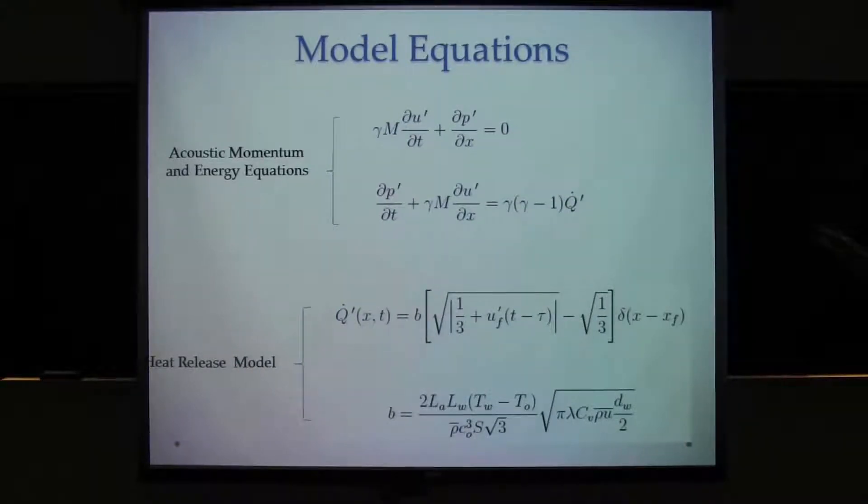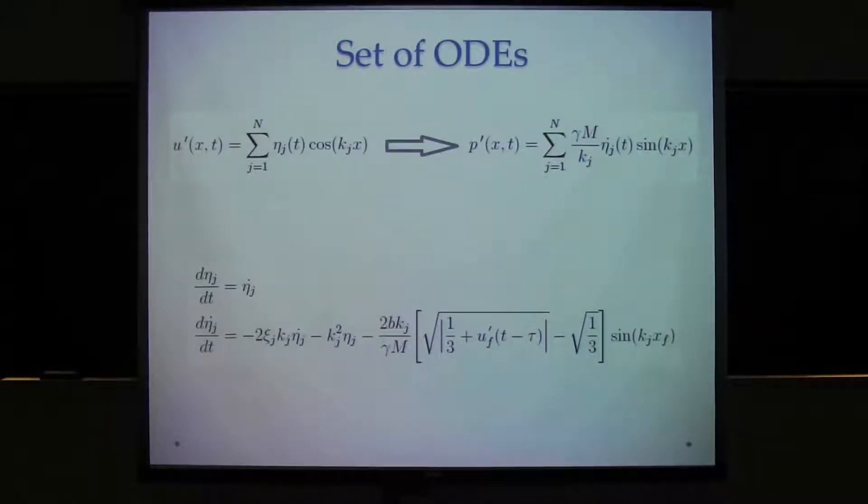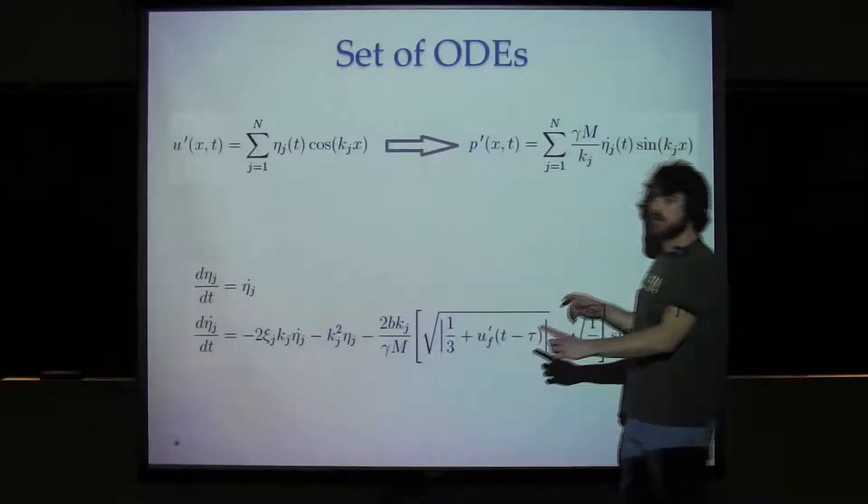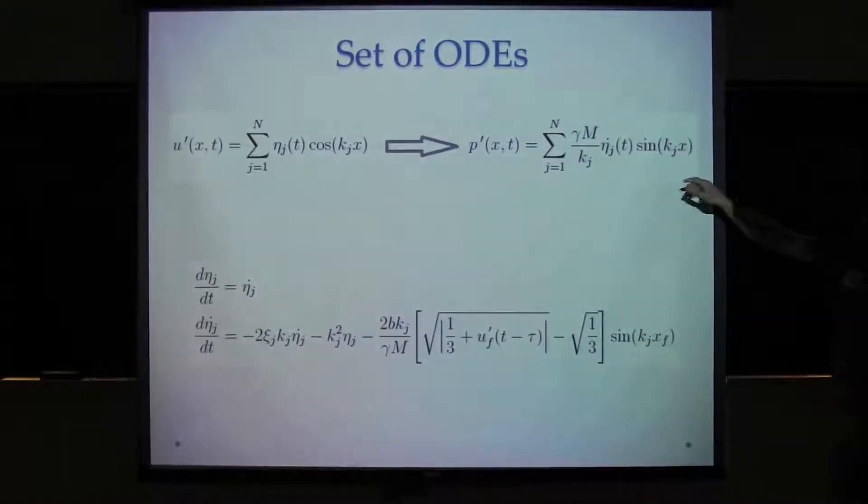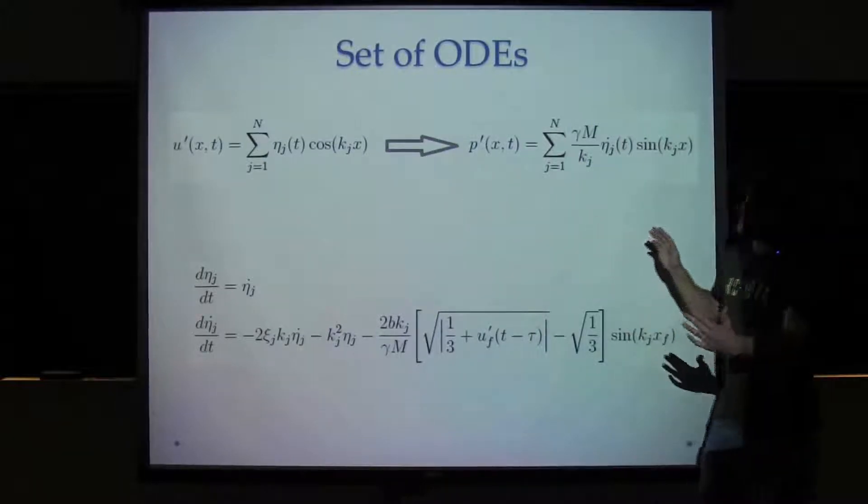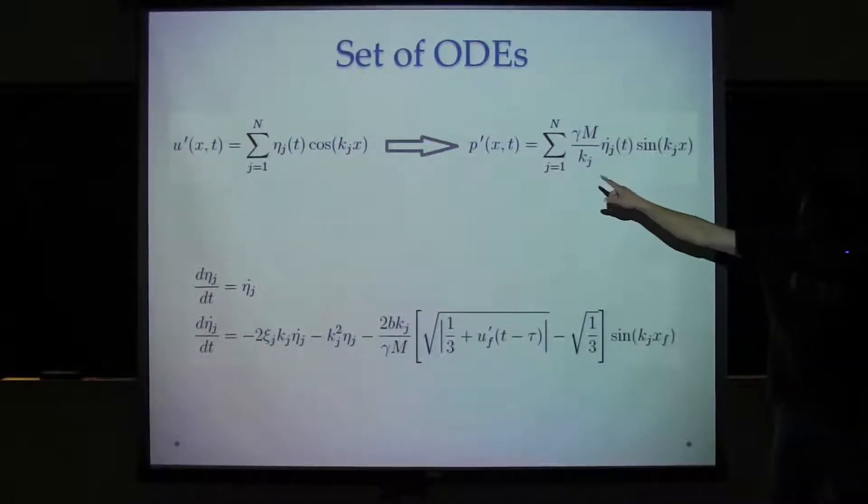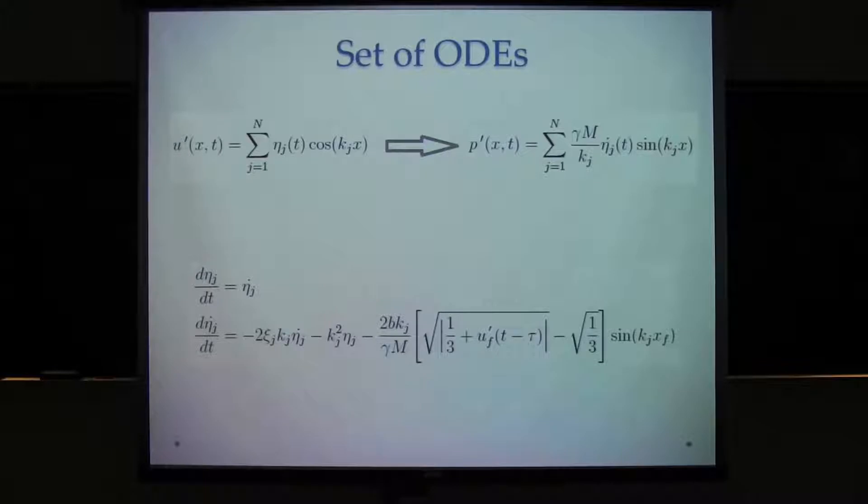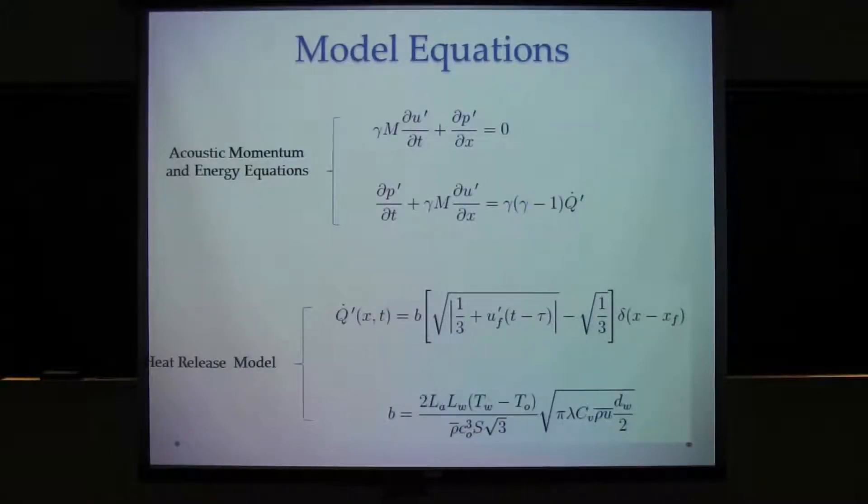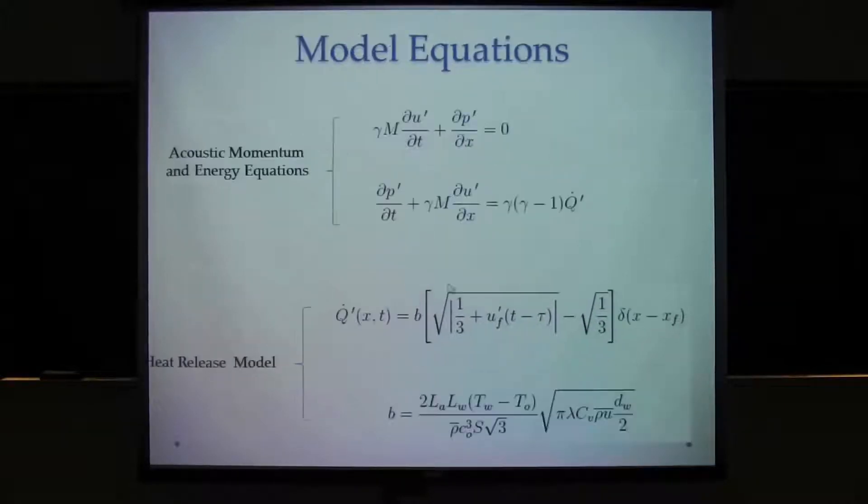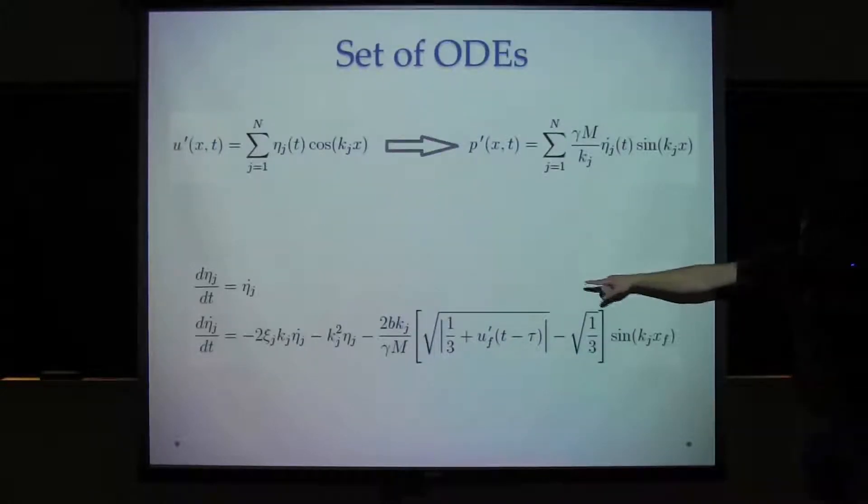So we have a set of PDEs and I'm trying to pass them to ODEs. So one assumption, they mentioned the Galerkin expansion. We use this function, these cosine functions, because we're considering open-open tubes. So the pressure, the velocity is going to be maximum at the ends of the tube. So the sine functions are really good to use to model this problem. Based on the previous equation, if we substitute that u' back into that first acoustic equation, we get a straight-off result for p' and then we take these two results and substitute into the energy equation with that model and we get the set of ODEs.